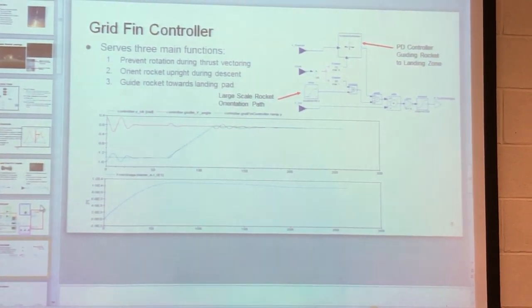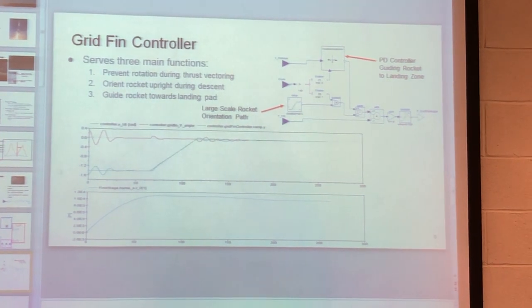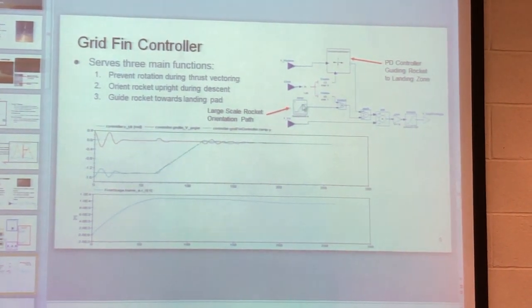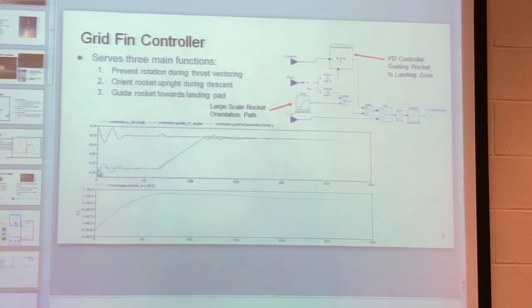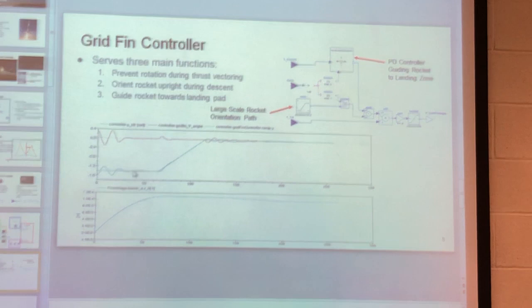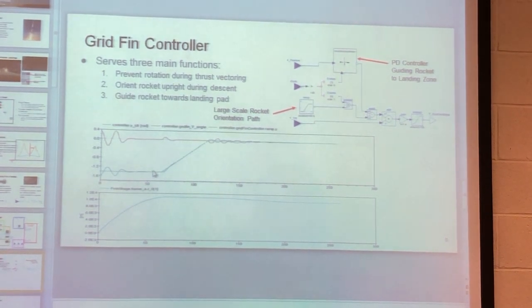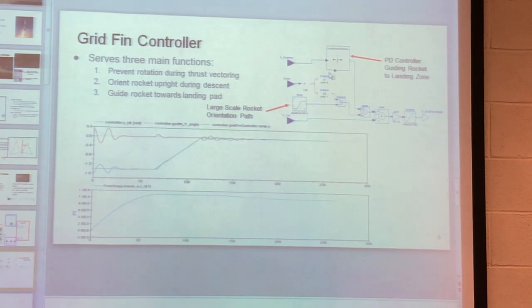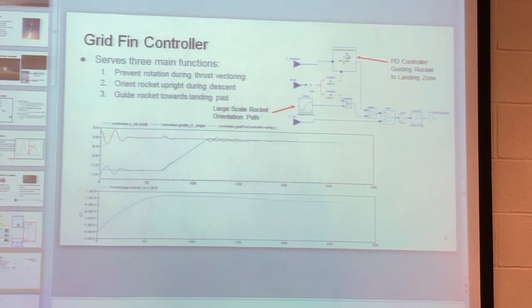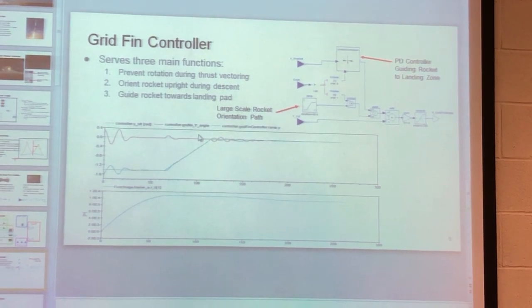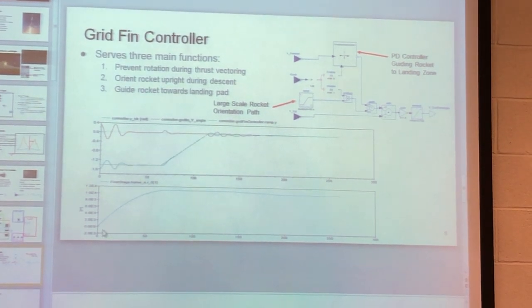And then lastly, you need the grid fins to basically guide the rocket over to its landing pad. And that's basically all done with this logic. I basically have a ramp function. You can see down here, and that's the overall orientation of the rocket. It pretty closely follows that. And red is the actual grid fin angle. And then on top of that, I have this location controller, and that's basically another PD controller that basically guides the rocket to its landing zone. So that basically adds a small amount on top of this ramp function to basically guide it back to its landing zone.